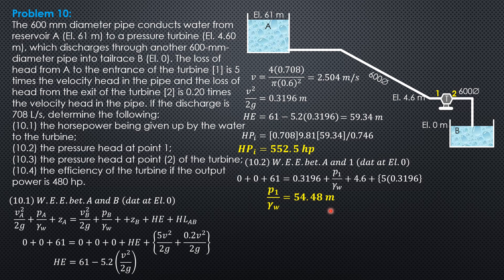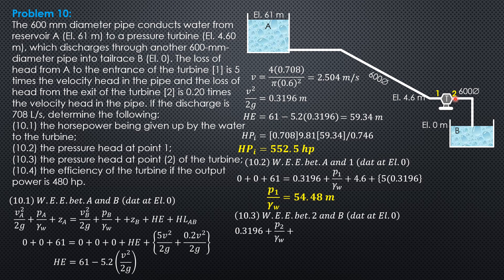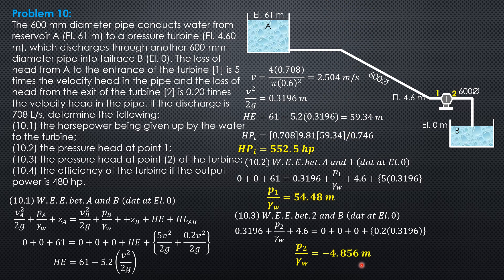For pressure head at point 2, we write the energy equation between points 2 and B, with datum still at elevation 0. Velocity head at 2 is 0.3196, pressure head at 2 is unknown, elevation head is 4.6. This equals velocity head at B (0), pressure head at B (0), elevation head at B (0), plus head loss between 2 and B of 0.2 times the velocity head. So pressure head at 2 equals negative 4.856 meters.